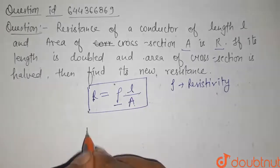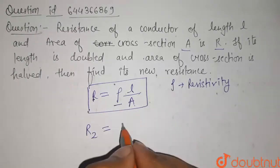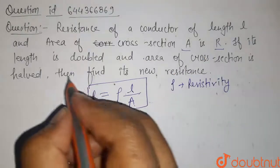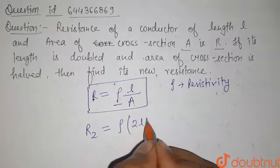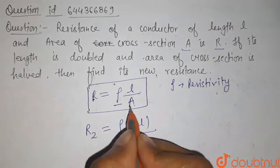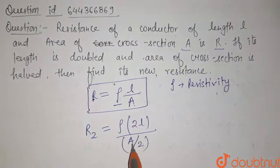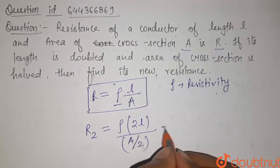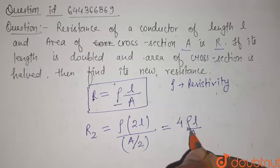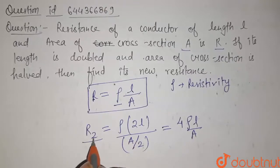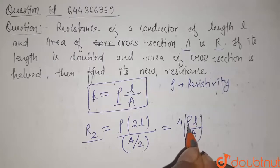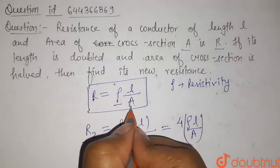Now in the second case, R2 equals to Rho, where the length is doubled — that is, the length becomes 2L — and the area of cross section becomes half, that is A by 2. So from this, we get 4 into Rho L by A. That is, the value of new resistance R2 equals 4 Rho L by A, and we know the value of R is Rho L by A.